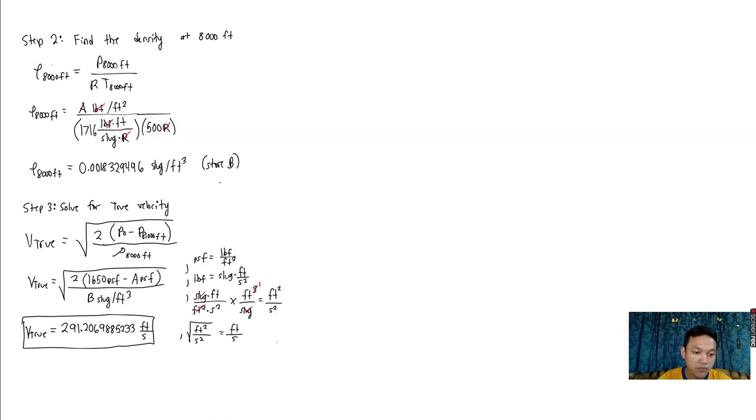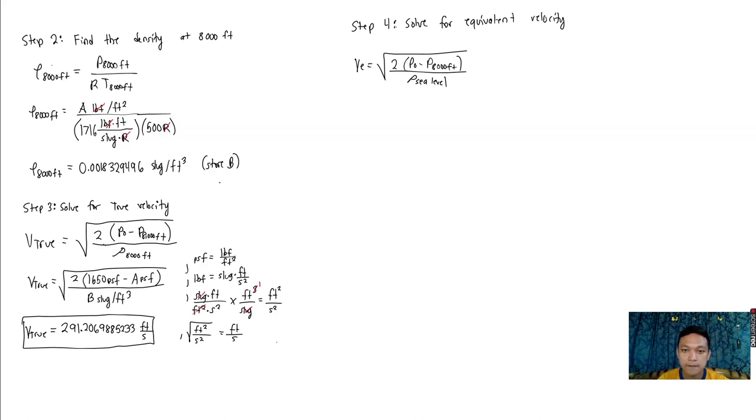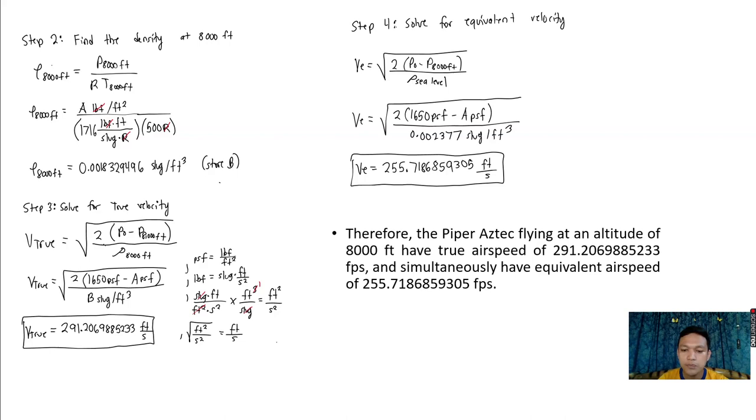Our next step is to solve for the equivalent velocity. From the formula of equivalent velocity, inputting the values and solving through a calculator, we have equivalent velocity is 255.7186859305 feet per second. Therefore, the Piper Aztec flying at an altitude of 8,000 feet has true airspeed of 291.2069885233 feet per second and simultaneously has equivalent airspeed of 255.7186859305 feet per second. That's all, thank you for listening.